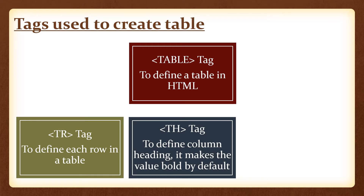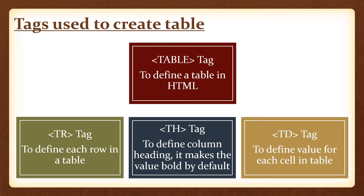Then we will use the th tag. This tag is used to define the column headings. Whenever we define column headings with the th tag, it makes the text bold — it makes the values of those cells bold. Then the td tag. This tag is used to define the values for each cell in a table. The table is made up of cells, so each cell value is defined with the td tag.